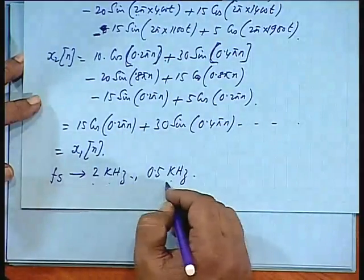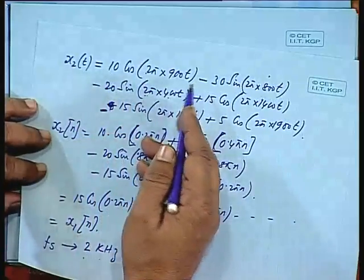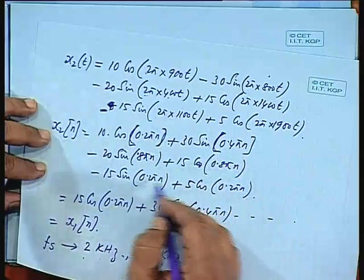Two signals that are different in the continuous domain appear identical in the discrete domain at 1 kHz sampling. If you change the sampling rate to 2 kHz, verify whether x1(n) and x2(n) are equal or different for these frequencies. This demonstrates that two signals might appear identical under one sampling condition but differ at another rate. We shall take up more examples in the next class using the frequency transfer. Thank you very much.